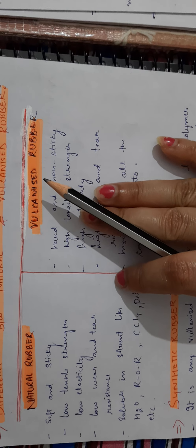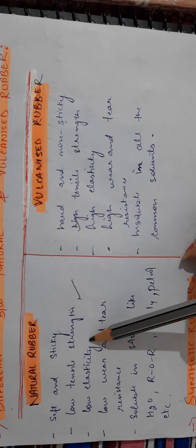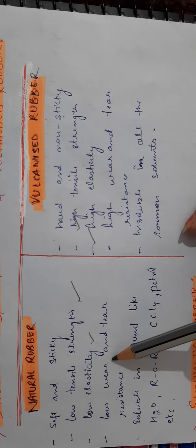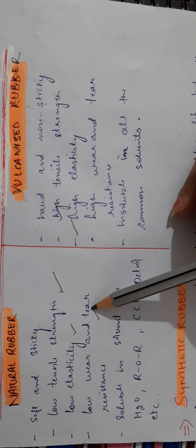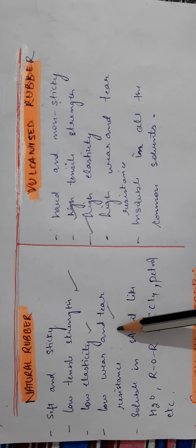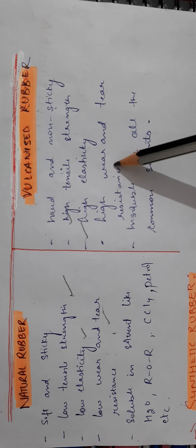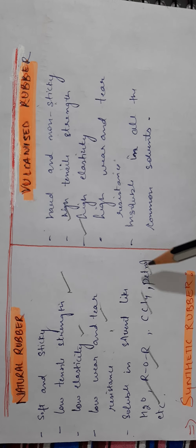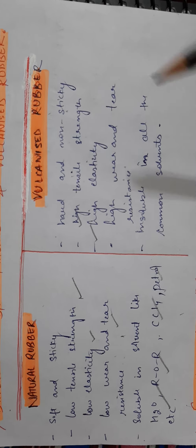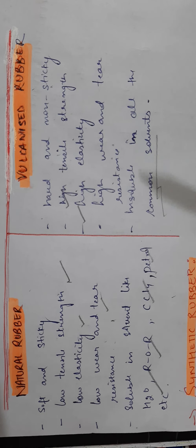Comparing natural and vulcanized rubber: Natural rubber is soft and sticky; vulcanized rubber is hard and non-sticky. Natural rubber has low tensile strength and low elasticity; vulcanized rubber has high tensile strength and high elasticity. Natural rubber has low wear and tear resistance and is soluble in solvents like water, ether, CCl4, and petrol. Vulcanized rubber has high wear and tear resistance and is insoluble in these common solvents.